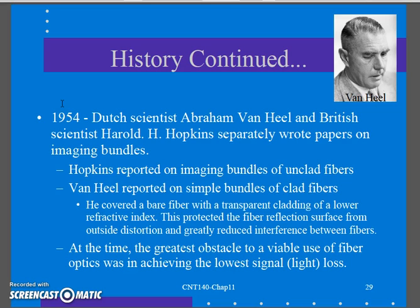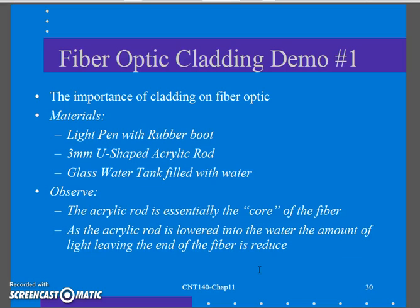In 1954, some scientists published papers on imaging bundles, discussing unclad and clad fibers. Unclad is just a plastic rod with no insulation — as you send light through it, some light bleeds out. A clad fiber has insulation around it that keeps light inside the fiber, reducing signal loss. So cladding means less light loss. This was not known stuff at the time — people were figuring it out. We'll come back in our next podcast and look at the idea of cladded versus uncladded fiber and what happens.